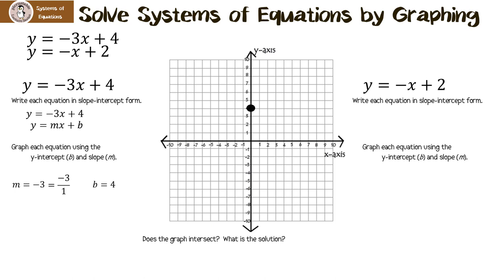Now we do the slope. Remember, it's rise over run. Since our slope is negative three over one, we go down three and to the right one. Let's do it one more time — down three and over one. And let's draw our line.